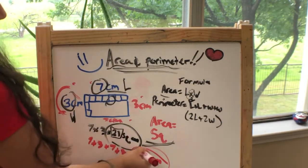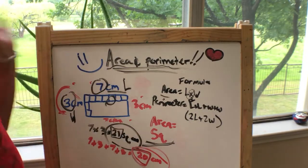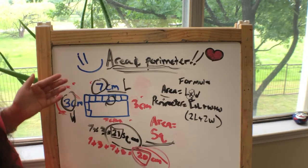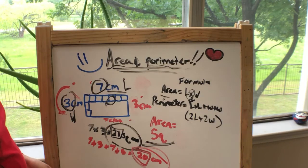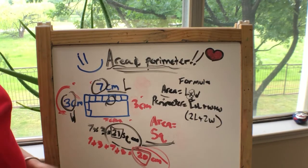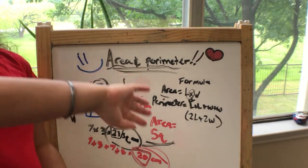So we got our area and we got our perimeter. That's how you do a rectangle. Now I'm gonna have to do a square, but I'll do that later. So I'll see you guys later, bye.